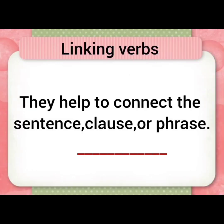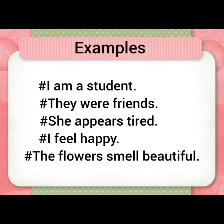Then finally, the last element is linking verbs. They help to connect a sentence to another sentence, clause or phrase. For example: 'I am a student.' 'They were friends.' 'She appears tired' — appears is considered a linking verb here. 'I feel happy.' 'The flowers smell beautiful.' That's how all these elements are combined together to form a sentence.